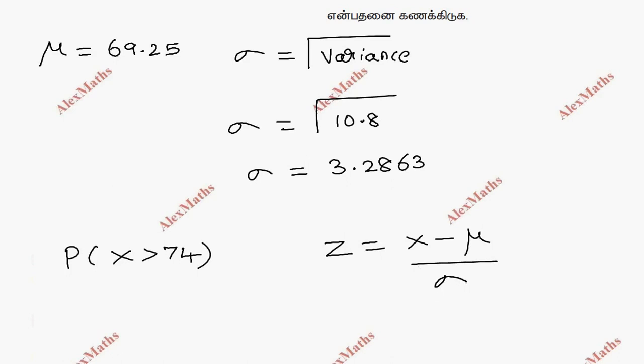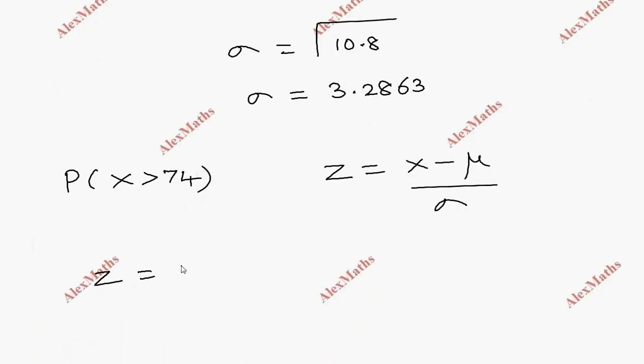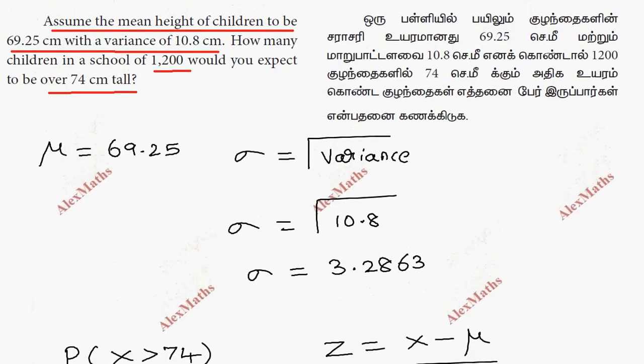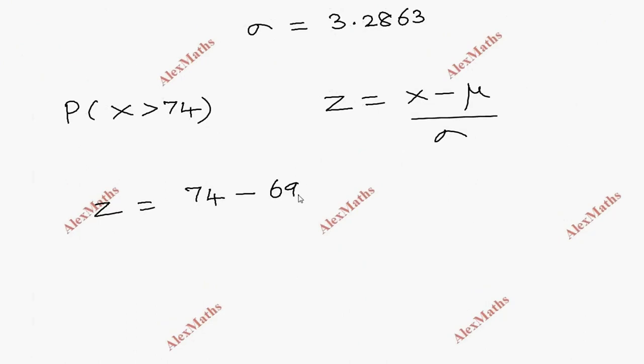So z = (74 - 69.25) / 3.2863. The numerator is 4.75 divided by 3.2863, which gives us a value of 1.445.